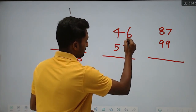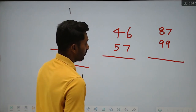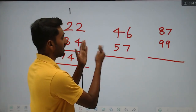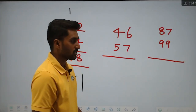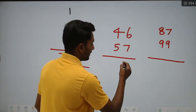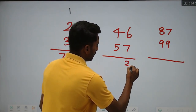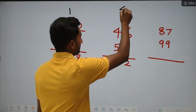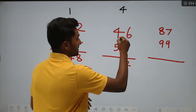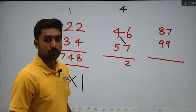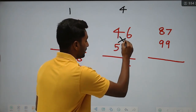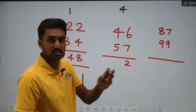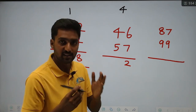Straight cross straight. For the straight step: 6 into 7 multiply is 42. Write down 2, carry 4. Then the cross: 7 into 4 is 28, plus 5 into 6 is 30. 28 plus 30 is equal to 58.